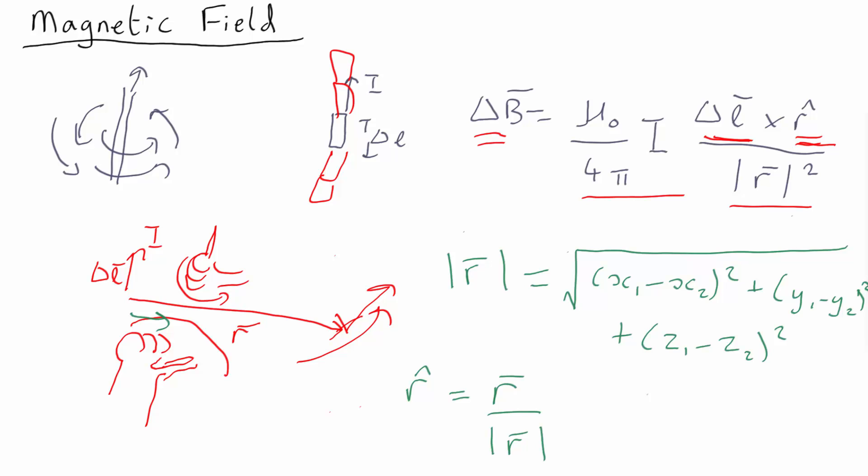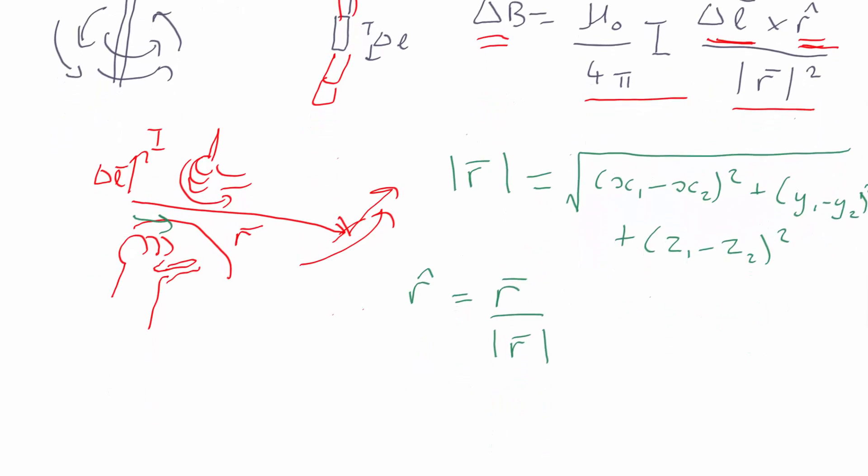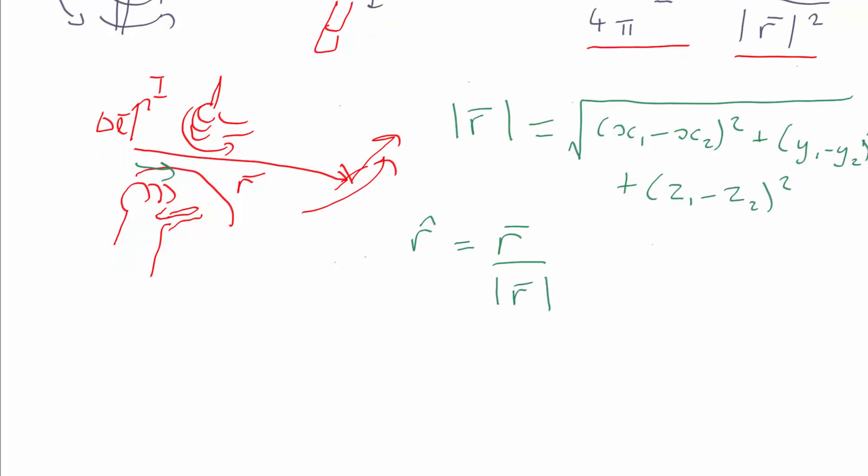So we can rewrite the Biot-Savart law as delta B equals mu nought over 4 pi I delta L cross R. And now it's the full vector R, not just the unit vector in that direction. And to compensate for that, the mod R at the bottom has to be cubed, rather than just squared.